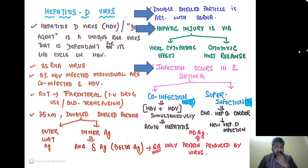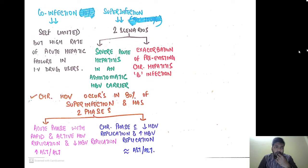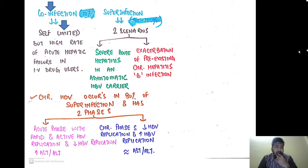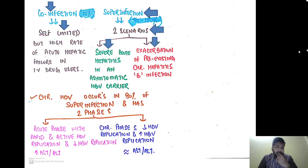Infection occurs in two settings. First is co-infection, characterized by simultaneous infection with hepatitis B virus and hepatitis D virus, which can lead to acute hepatitis. Second is super-infection, where a chronic hepatitis B carrier is infected by hepatitis D virus. Co-infection is basically self-limited but there is a high rate of acute hepatic failure in IV drug users. Super-infection can present as severe acute hepatitis in an asymptomatic hepatitis B carrier, or as exacerbation of pre-existing chronic hepatitis B infection.